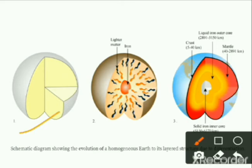In the second figure, the core is formed and enriched with iron, and lighter matter is moving towards the surface. In the third figure, the planet is fully differentiated as today's Earth, with a crust, mantle, and core.